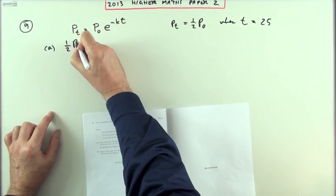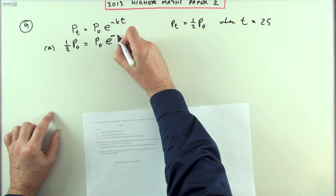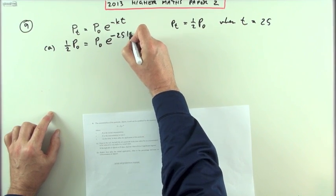So you could just put that in here. I've got half of p-naught equals p-naught e to the negative, and I know that t is 25, so I'll put that first, 25k.